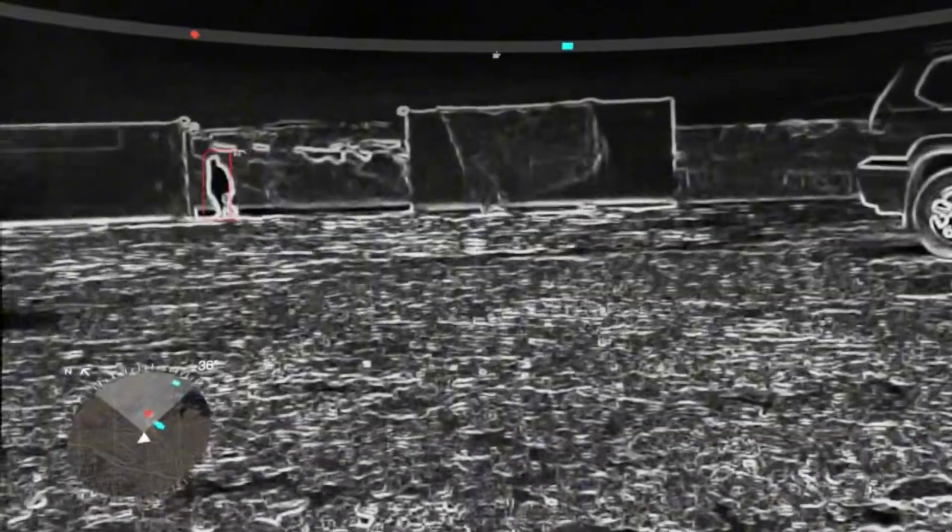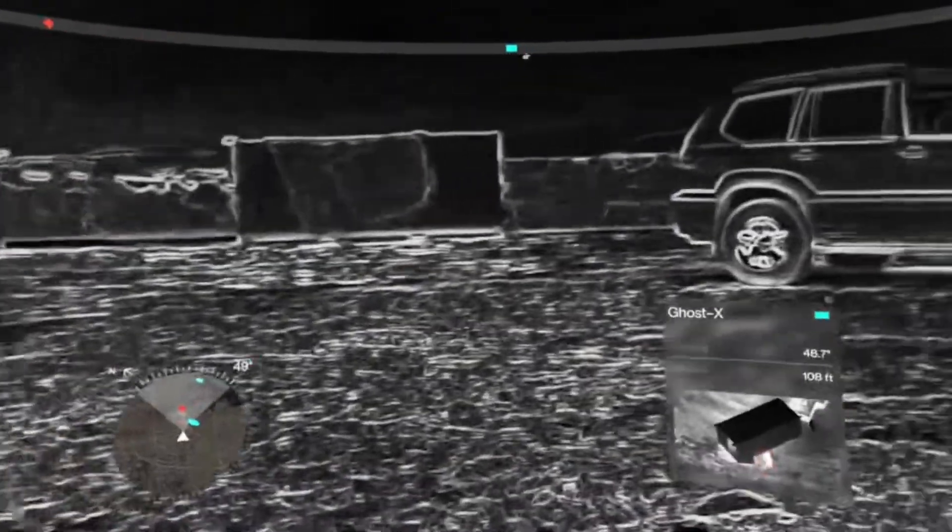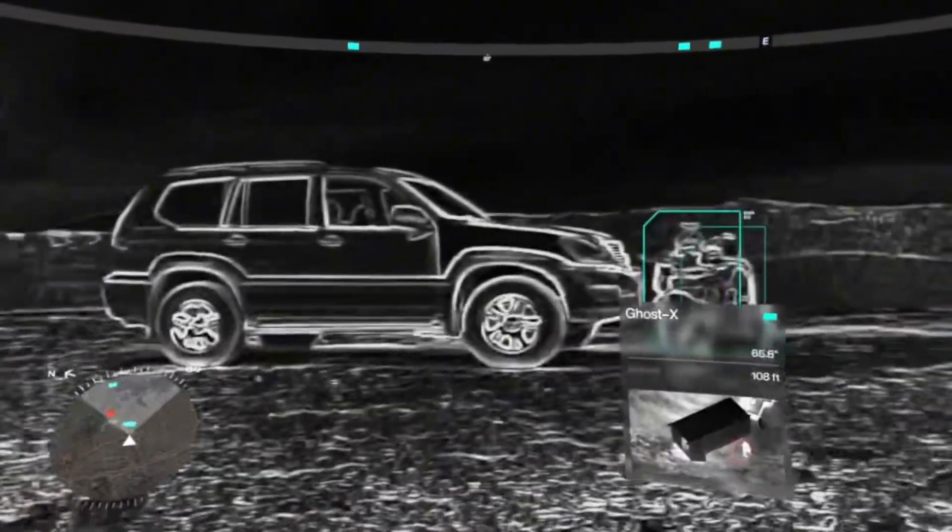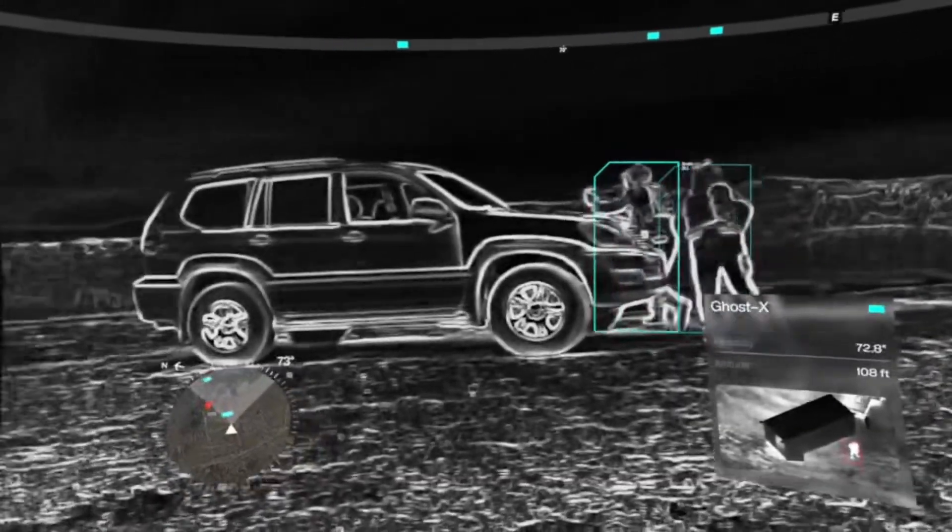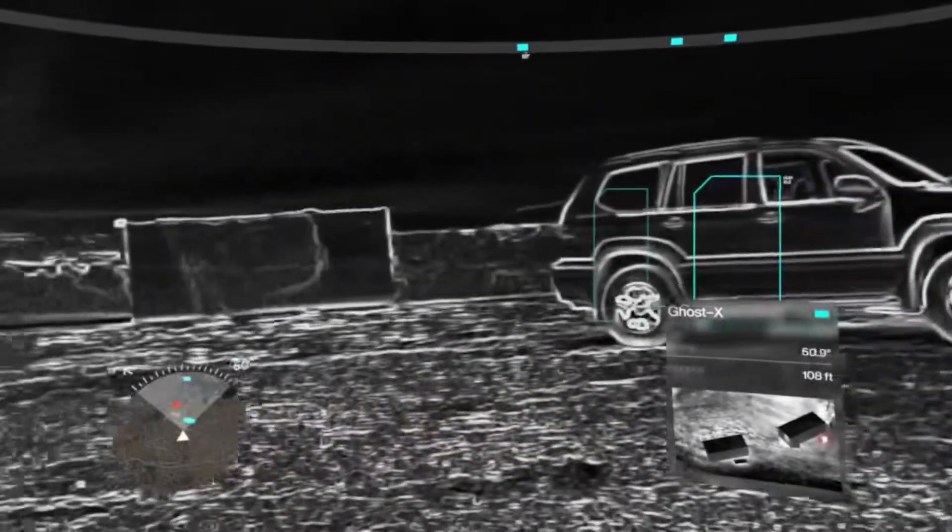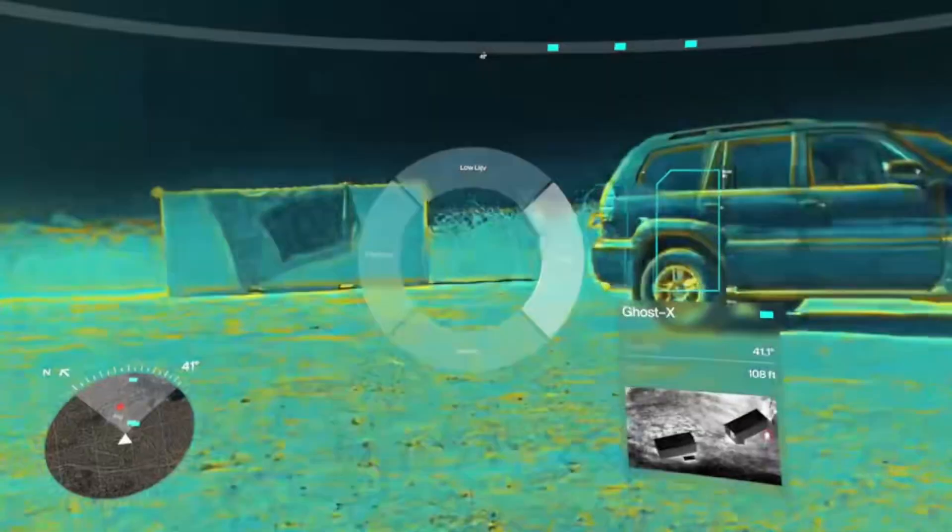The U.S. defense tech company Endural has just unveiled Eagle Eye, a next-generation combat helmet that gives soldiers something close to superhuman awareness. It's not just armor. It's a full sensory system.